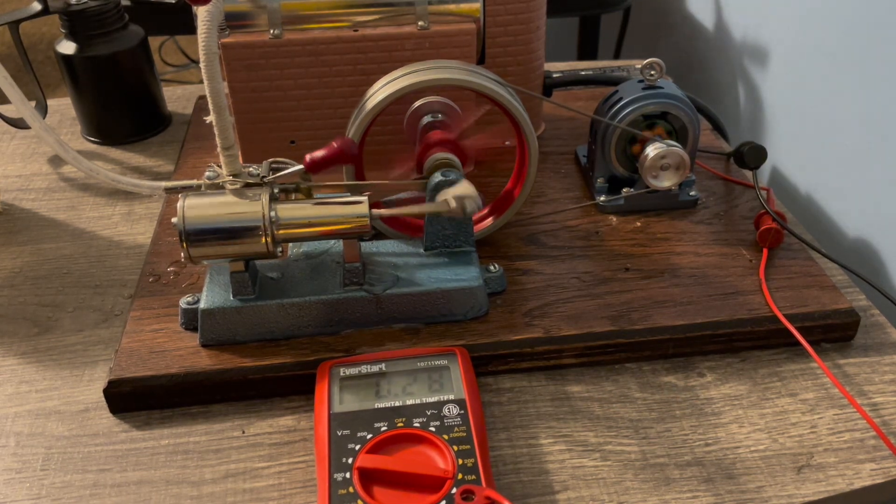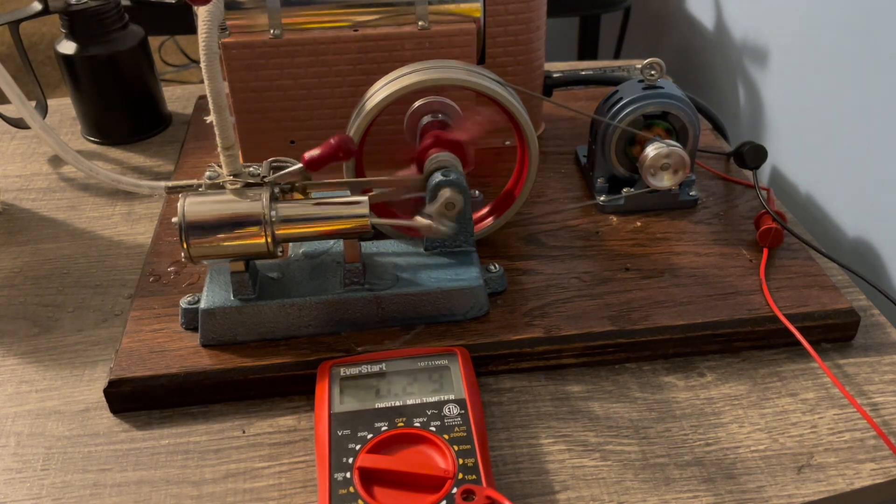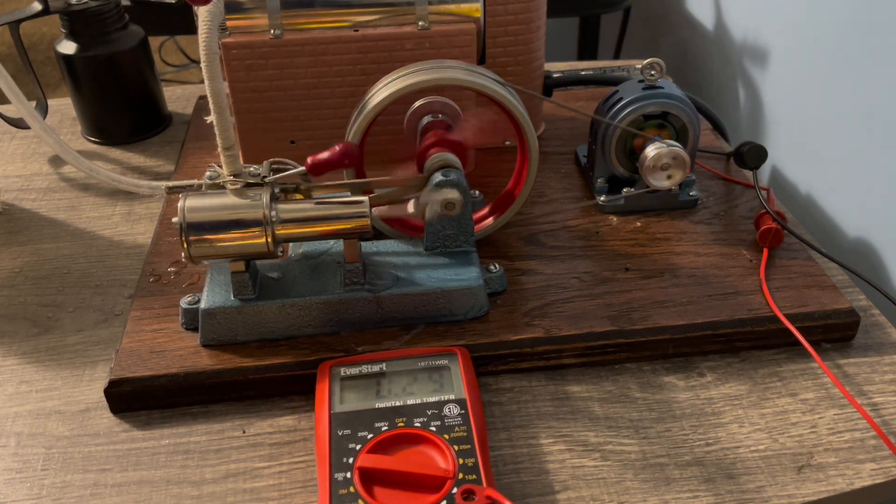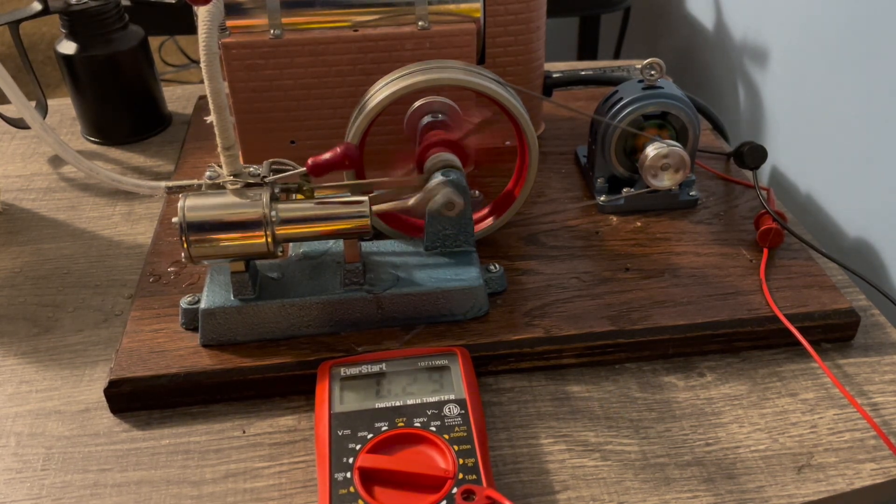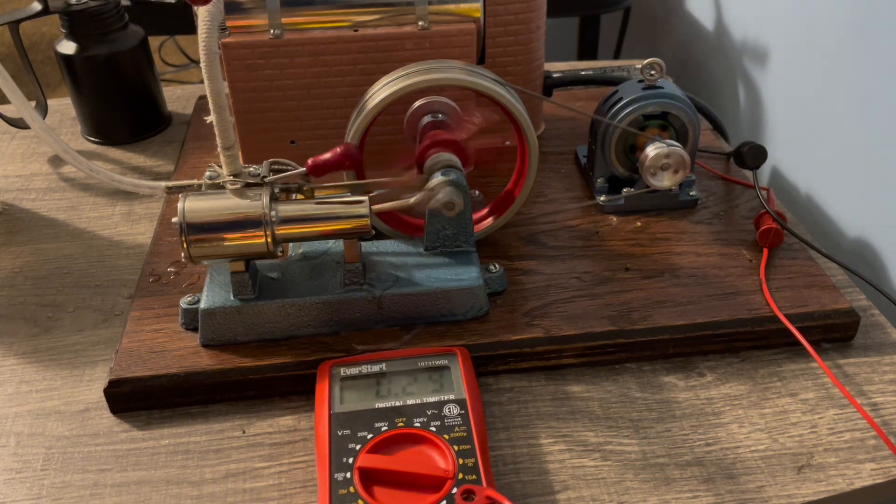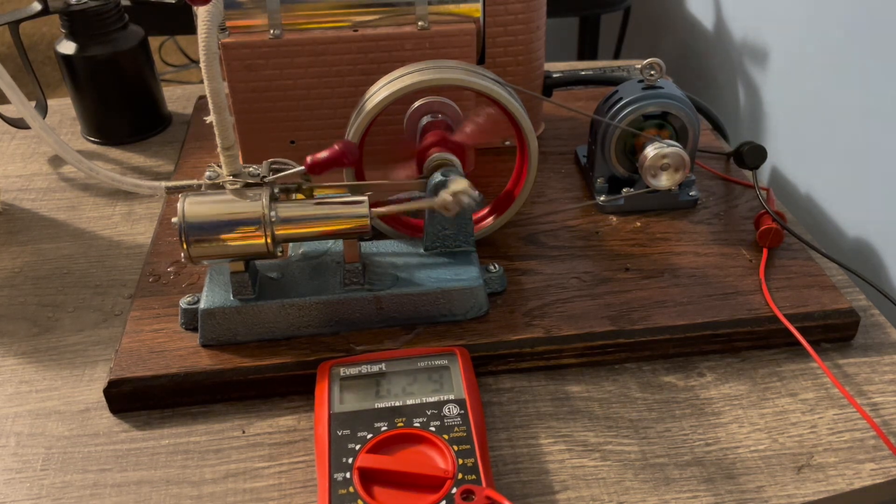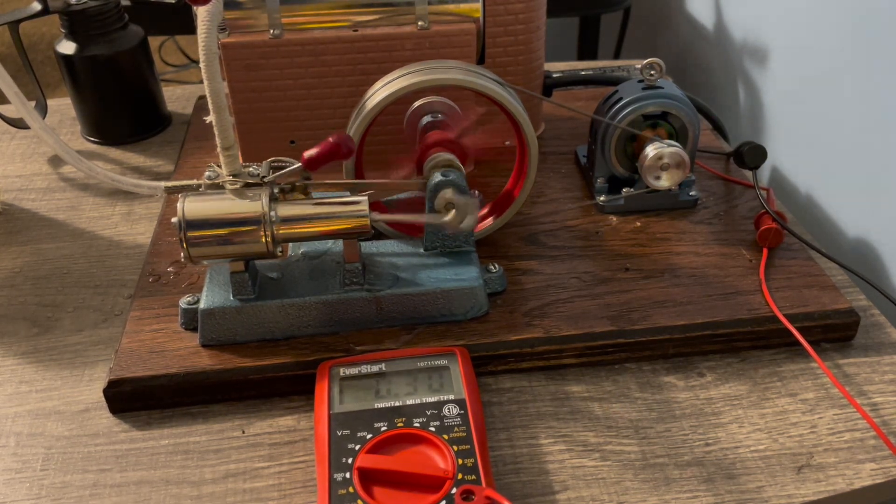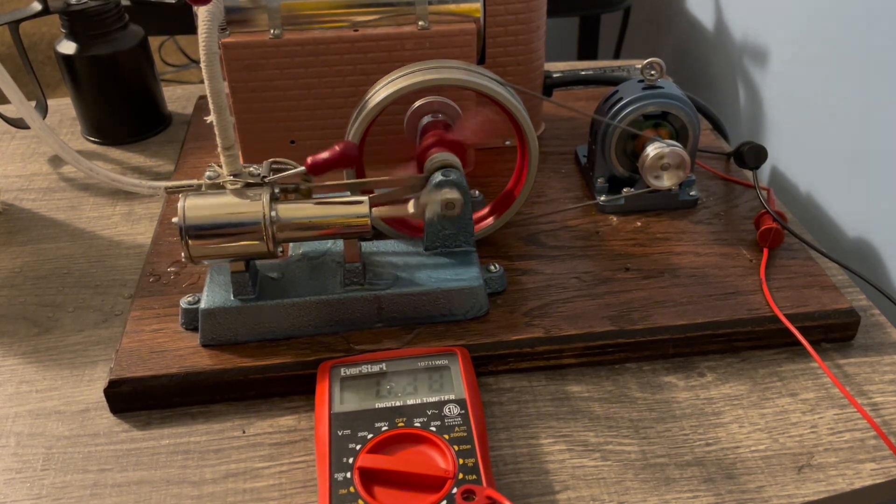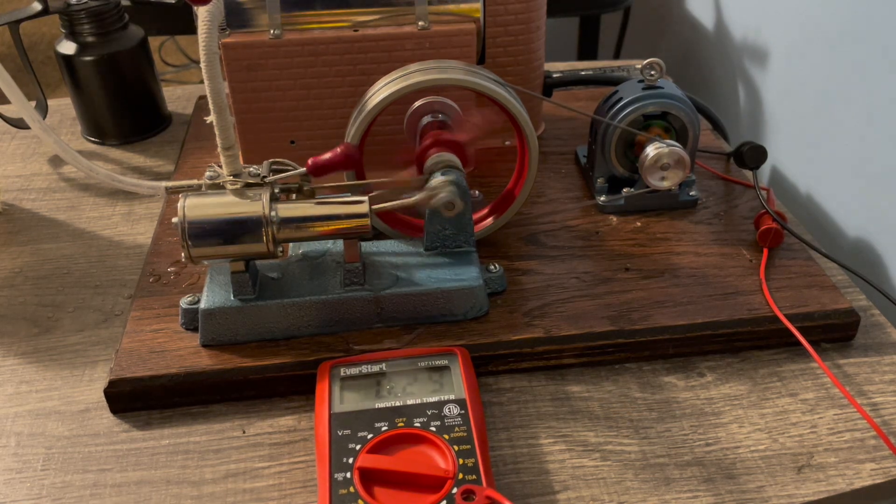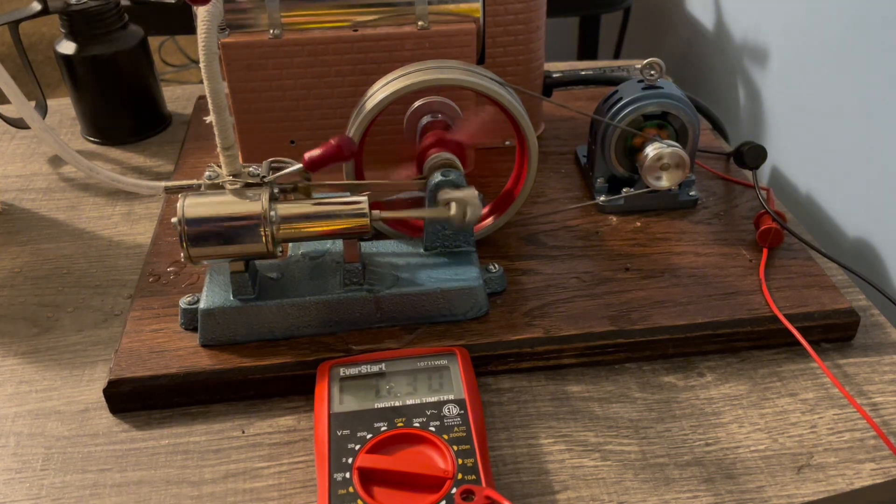Yeah, the pressure is actually climbing, surprisingly enough. We're at like 12 pounds on the gauge. That's impressive. We're at 0.3 amps. Okay, not sure why the pressure gauge is climbing, but if you missed my last video about the AliExpress generator, I'll leave a link in the description down below of where you can get one.